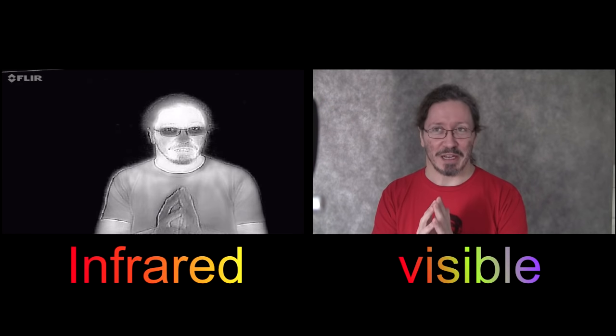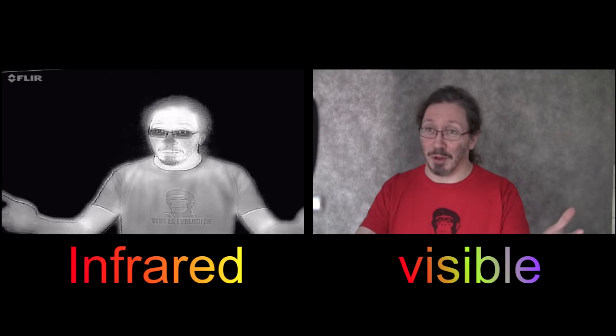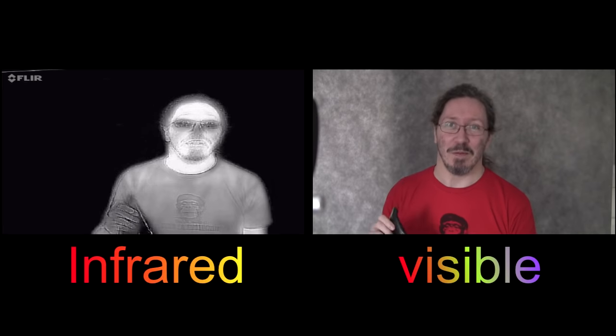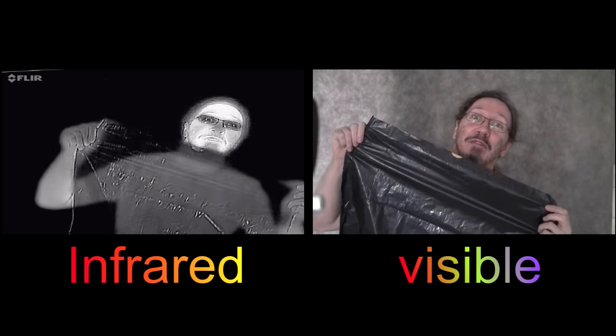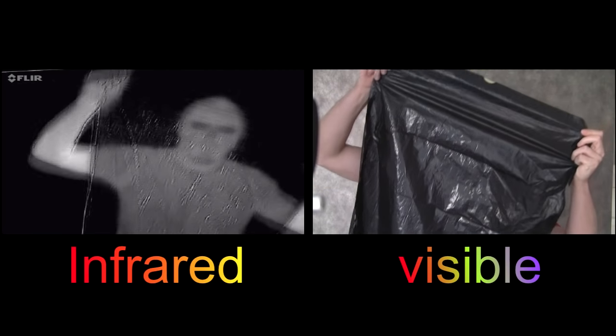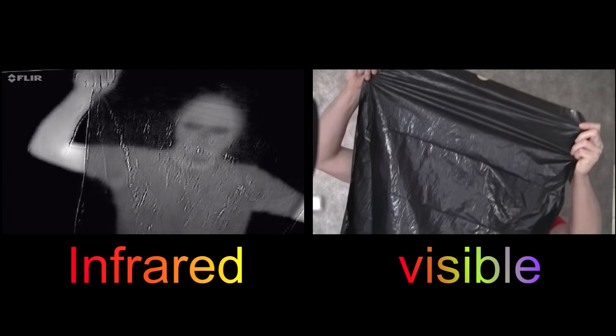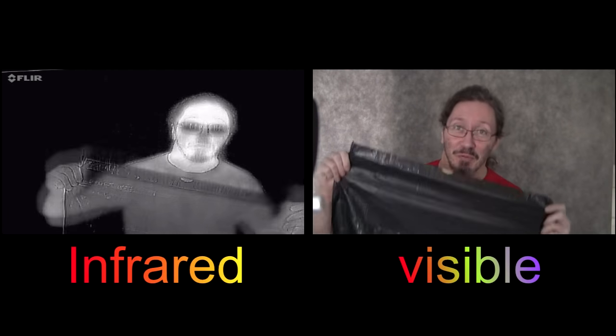It's one of these interesting things. If you want to hide from the visible part of the spectrum, I can get a black bin liner. What you'll find is that it's very good at hiding me from the visible spectrum. It blocks out all of the light.